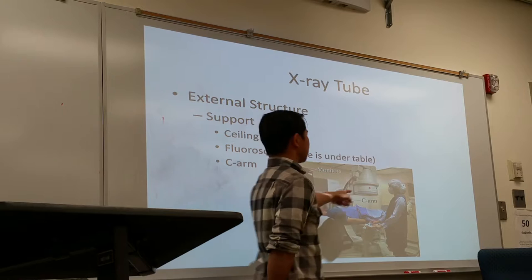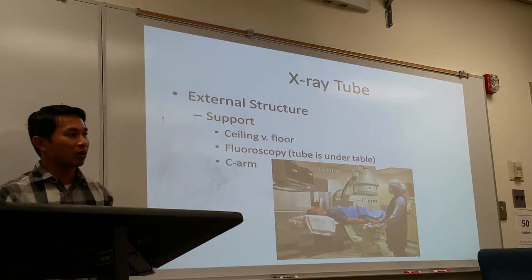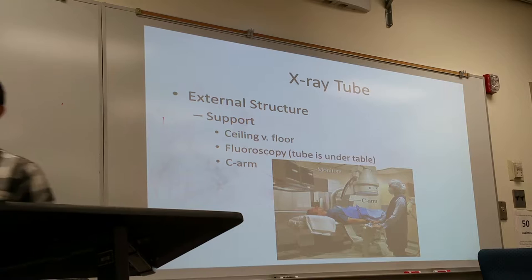The floor x-ray tube can also be built within a mobile device called a C-arm. We call it a C-arm because it's shaped like a C — very technical of us. We use that mainly in procedures, especially in surgery. A big portable device is taken to the surgery room, a cover is placed on it for sterilization, and then you perform your floor procedure.